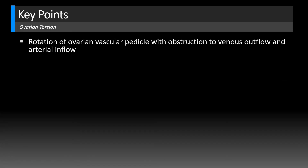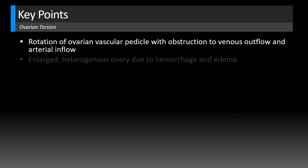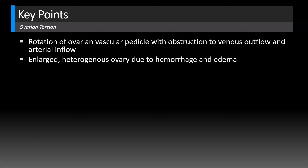Torsion occurs when there is rotation of the ovarian vascular pedicle, causing obstruction to venous outflow and arterial inflow. That yields an enlarged heterogeneous ovary due to hemorrhage and edema. The follicles are displaced and appear as small peripheral cysts.